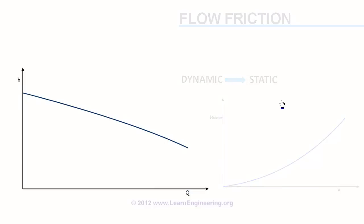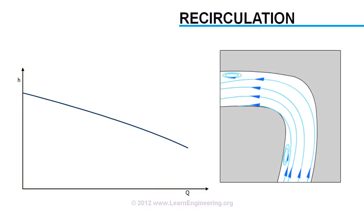Next is due to recirculation effect in the flow. When flow is below the design flow rate, recirculation losses become predominant as shown in the figure. When the pump operates at its design flow rate, recirculation loss is almost zero.